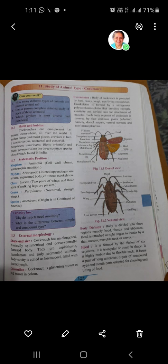Genus konsa rahega — humne uska naam dekha tha: Periplaneta americana, to genus ka pehla word hai Periplaneta. Iske characteristics: nocturnal — they are active during night time and come out for feeding — and straight wings. Species: americana, meaning its origin is in the continent of America. So systematic position: Kingdom Animalia, Phylum Arthropoda, Class Insecta, Genus Periplaneta, Species americana.